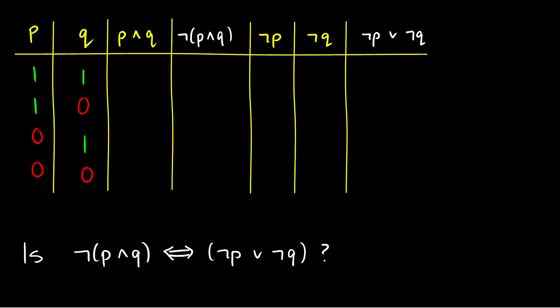Let's do another example. Is ¬(P∧Q) logically equivalent to ¬P∨¬Q? We just computed P∧Q, which is 1, 0, 0, 0. If we take the negation of that, the values are flipped. So ¬(P∧Q) is going to be 0, 1, 1, 1. Good — so we have the truth conditions for ¬(P∧Q).